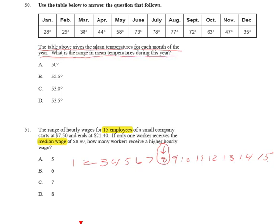Well, let's remember what mean temperature means. That means for all the days in January, it was 28 degrees. For all the days in February, 29. I don't think I need to go on. The range is really simple.